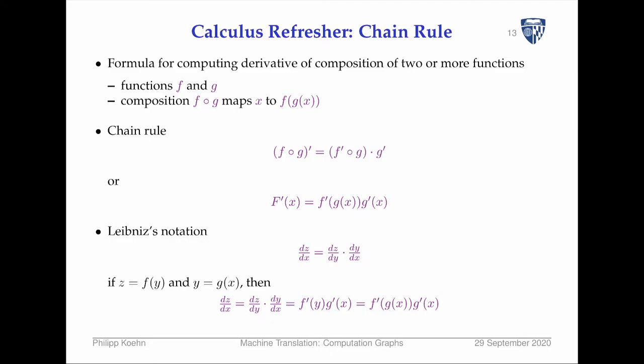The workhorse that allows us to deal with computation graphs in a very efficient manner — and even allow computers to do all the heavy lifting of computing derivatives and backpropagation to update parameters at any point in the computation graph — is the chain rule. The way you can look at the computation graph is as chains of computations: one function, then another function, then another, and so on. If you look at your old calculus books, you'll find a rule like this: whenever you have a function combination, this is the derivative.